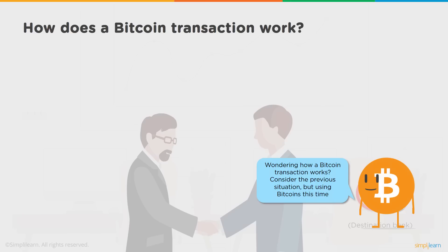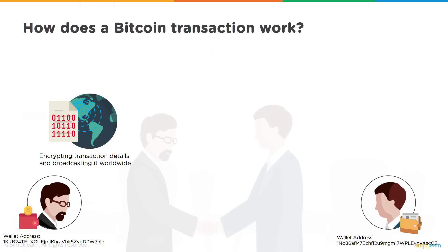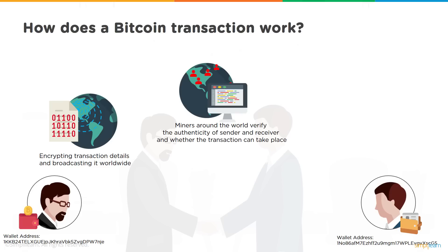How does a Bitcoin transaction work? Let's consider the same previous situation but this time make the transaction happen using Bitcoin. The same two entities will be exchanging Bitcoins, but first they have to create a wallet address on the Bitcoin network, and each will have their own private and public key. Whenever you want to send a Bitcoin on the blockchain network, you encrypt the transaction with your private key and broadcast it worldwide for the miners to validate it.